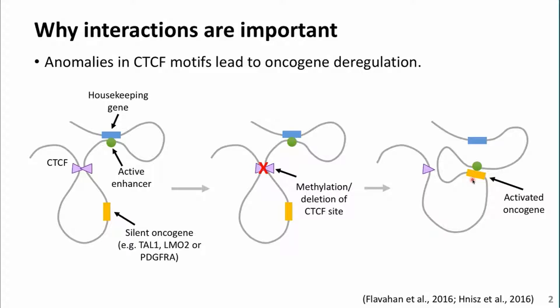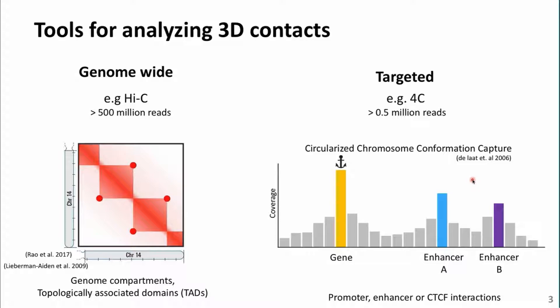There are, of course, a myriad of methods available to investigate these interactions. On one side, we have genome-wide methods like Hi-C that can unravel interactions from any part of the genome with any other part, enabling genome compartment analysis or topologically associated domains, but requiring a massive number of reads — think about 500 million reads. On the other hand, for topics focused on a specific region, targeted approaches like 4C or circularized chromosome conformation capture require far fewer reads and can ask if a gene is interacting with specific enhancers.